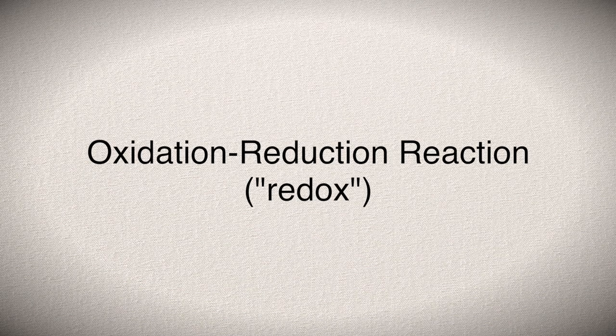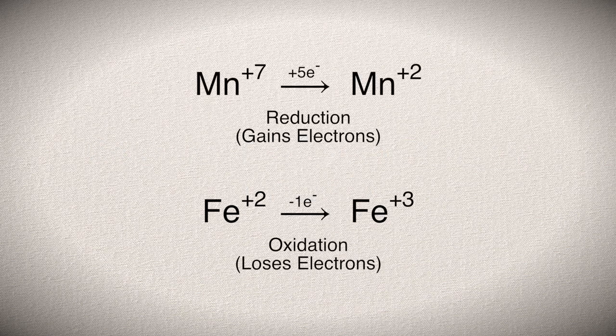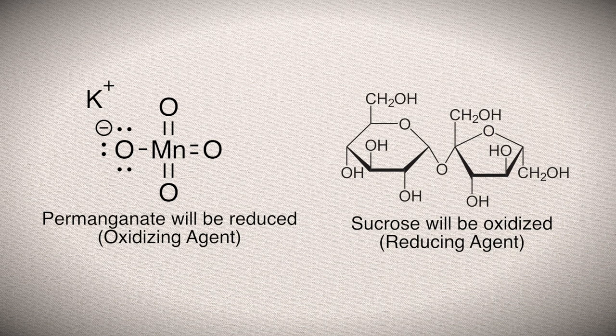The chameleon reaction is what is known as an oxidation-reduction reaction, or redox for short. In these reactions, one species gains electrons and is reduced, while the other loses electrons and is oxidized. Think of reduction as reducing the charge of one species, and oxidation as increasing the charge of the other. In this case, the species being reduced is the potassium permanganate, while the sucrose is being oxidized. This reaction must be carried out under basic conditions, which is where the sodium hydroxide comes into play.